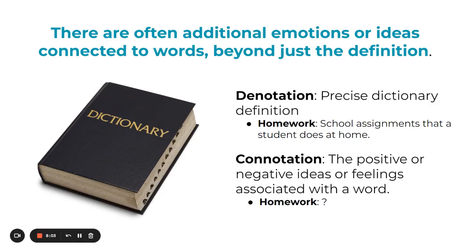When thinking critically, there are often additional emotions or ideas connected to words. A denotation — which is probably what you're most familiar with — is the precise dictionary definition of a word. The connotation refers to the positive or negative ideas or feelings associated with a word.